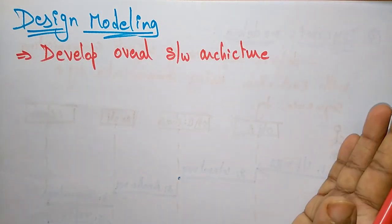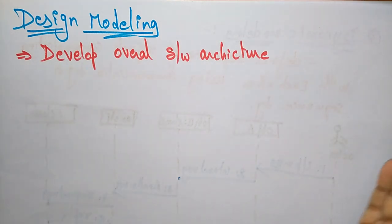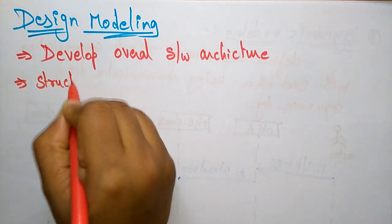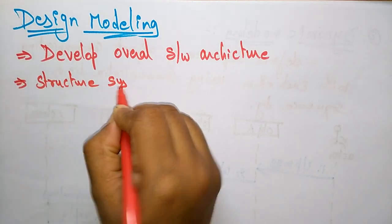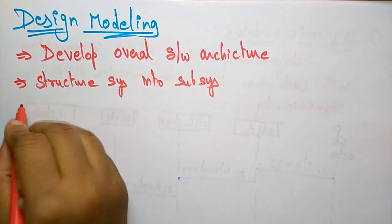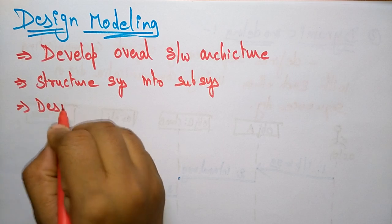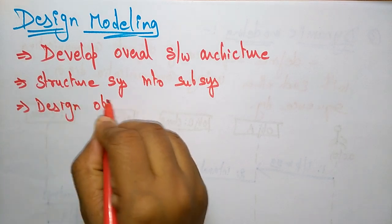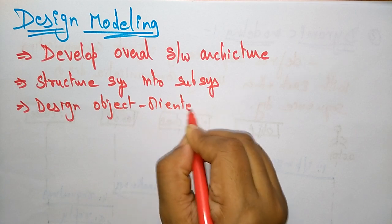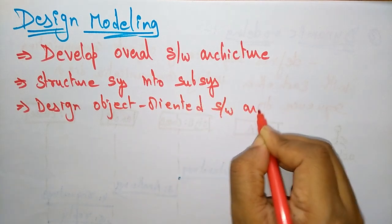The design model involves designing an object-oriented software architecture. First, you develop the overall software architecture and structure the system into subsystems, and then design the object-oriented software architecture.